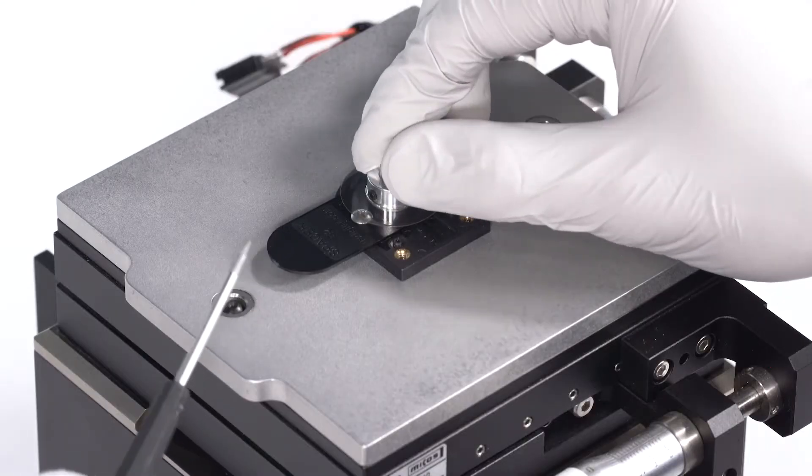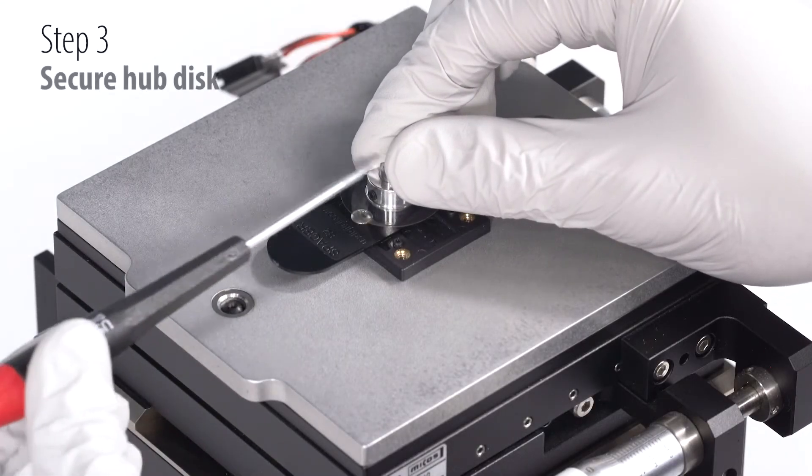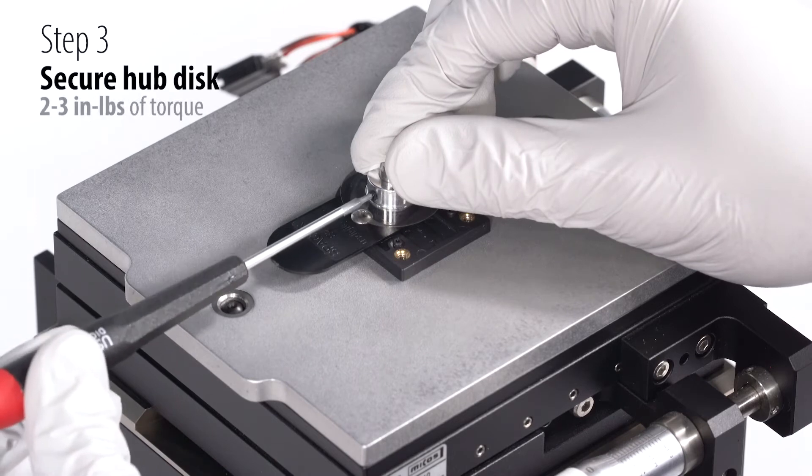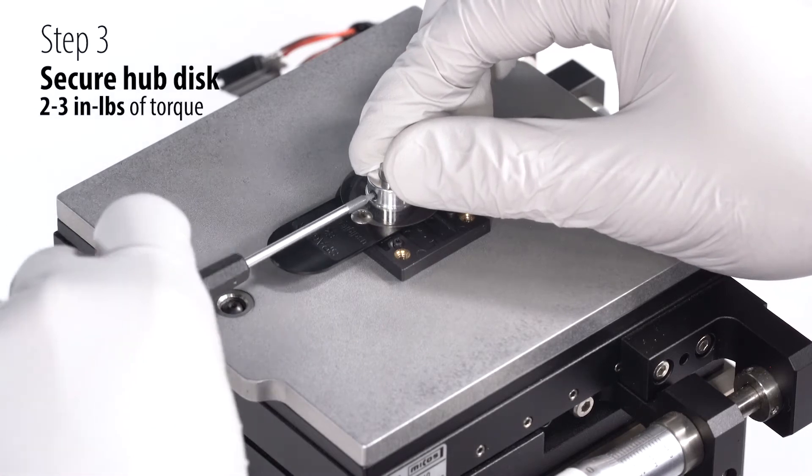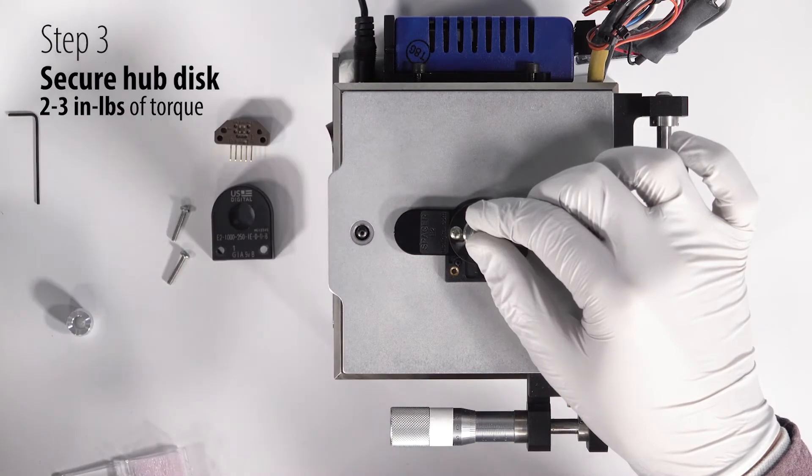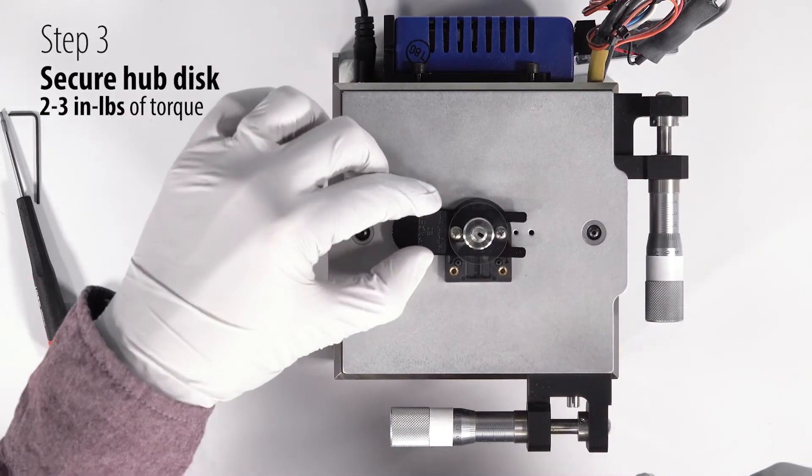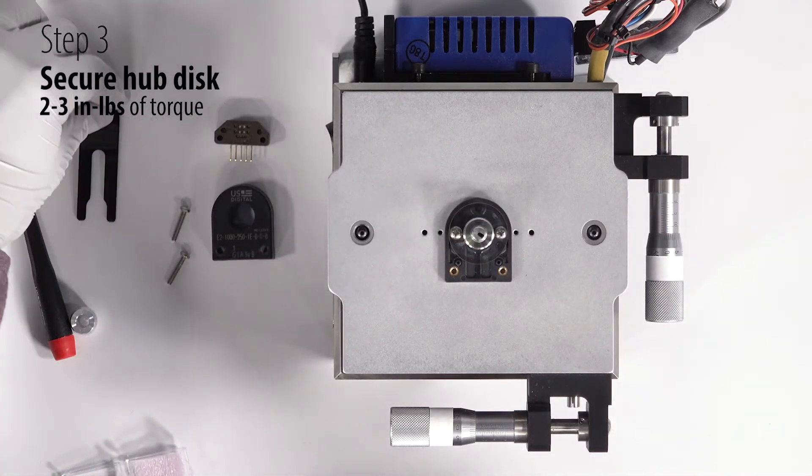For step three, we're going to tighten this set screw to two to three inch pounds while maintaining downward pressure on the hub disk assembly. Then remove the spacer tool for use with later installations.